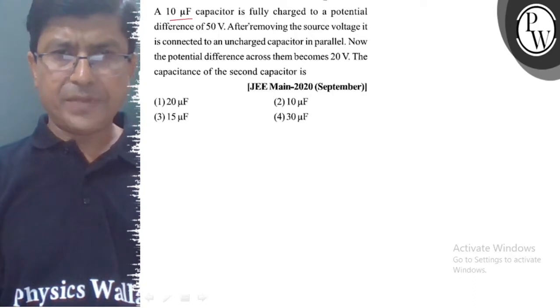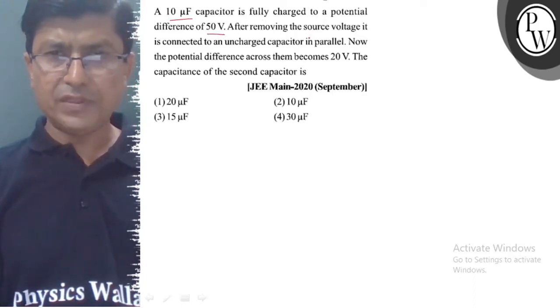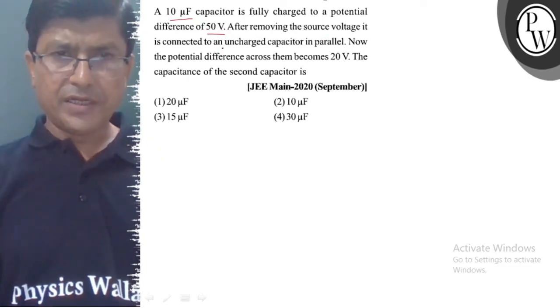A 10μF capacitor is fully charged to a potential difference of 50V. After removing the source voltage, it is connected to an uncharged capacitor in parallel.